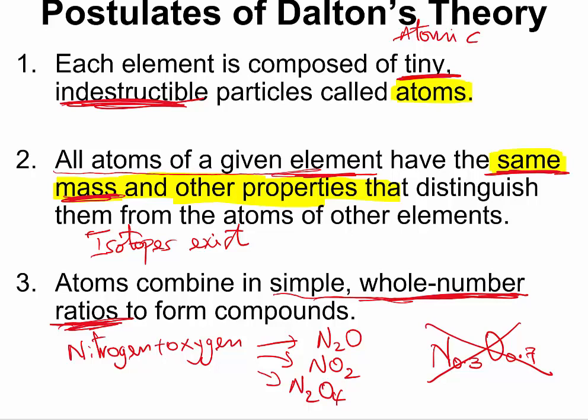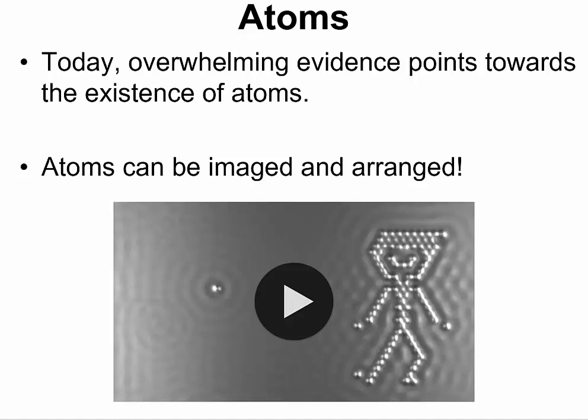His atomic theory may be a little shaky right now, but we now know for sure that atoms exist — we have undeniable evidence that atoms exist. Although we cannot observe atoms directly under the microscope, because microscopes operate at 10 to the negative 6 magnification and atoms are on the order of the nanoscale, we can take their images and we can even arrange them.